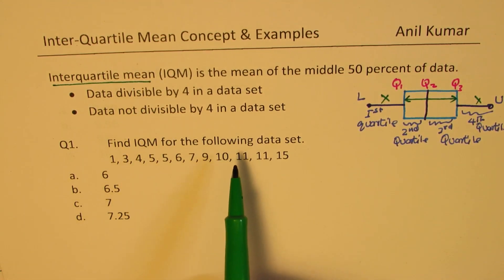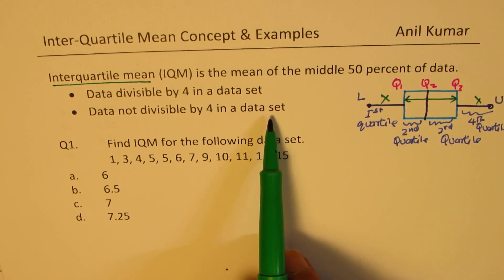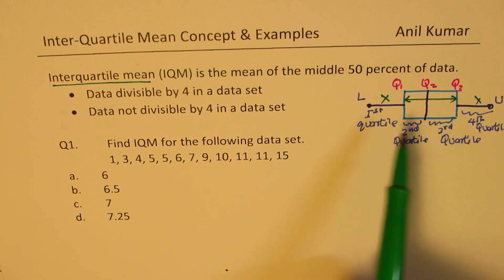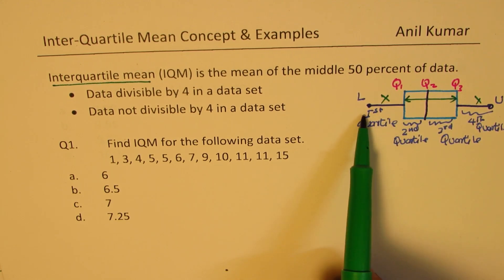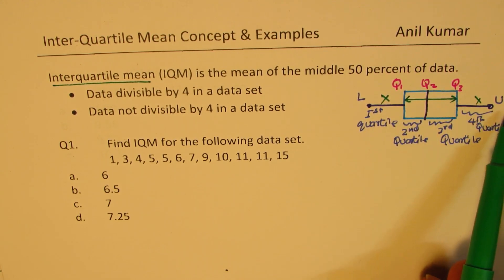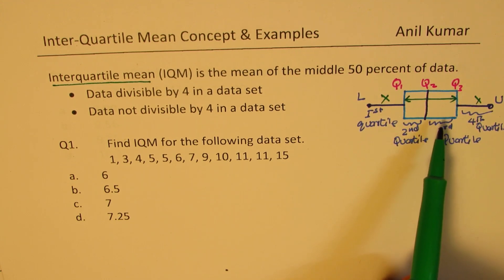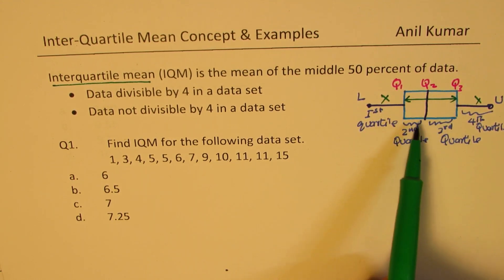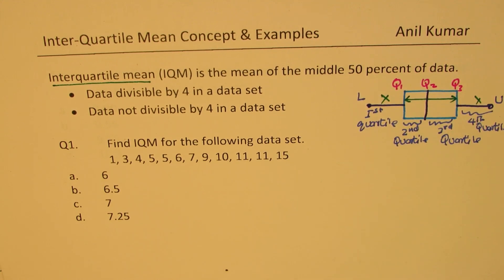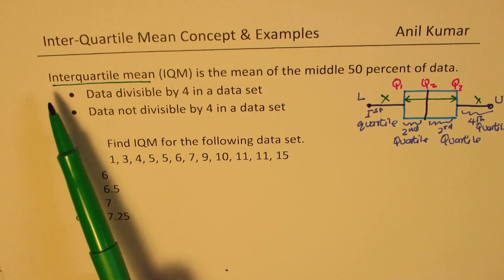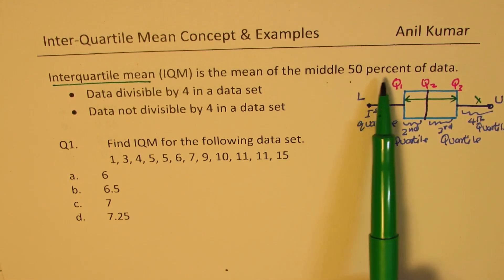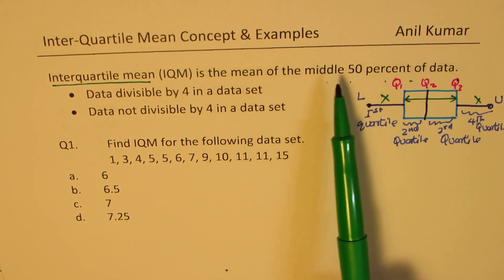The idea is that whenever we are given a data set, we'll exclude one-fourth of the data on the left side and one-fourth on the right side, and find the mean of the 50 percent of the data which is right in the center. So interquartile mean is the mean of the middle 50 percent of the data.